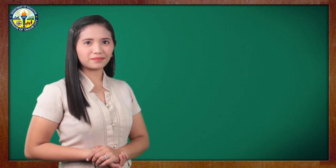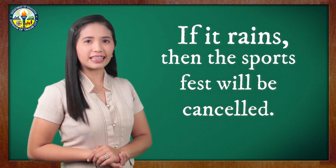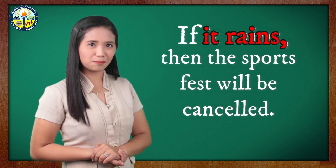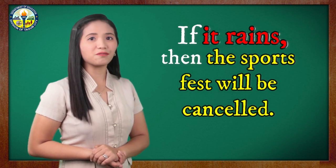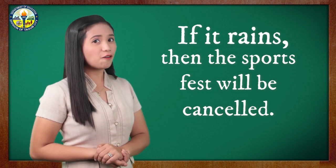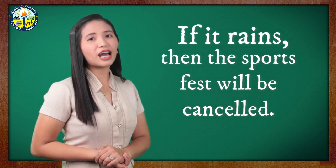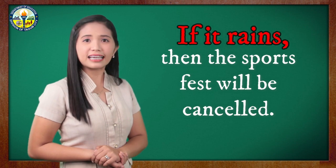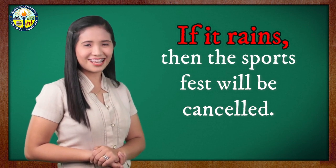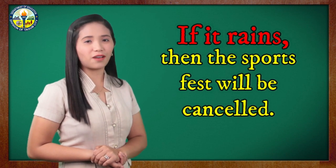Let's take this example: If it rains, then the sports fest will be cancelled. The P clause in this statement is 'it rains,' while the Q clause is 'the sports fest will be cancelled.' Based on the definition, the hypothesis is the P clause — 'it rains' — and the conclusion is the Q clause — 'the sports fest will be cancelled.'